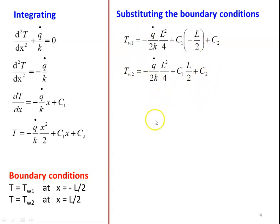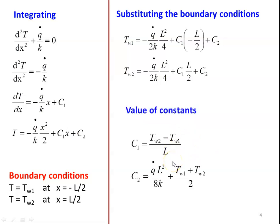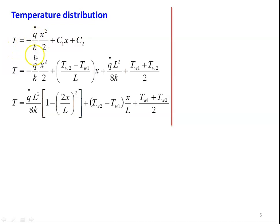Solving the two equations, we find C1 = (TW2 - TW1)/L and C2 = q̇L²/(8k) + (TW1 + TW2)/2. Substituting the constants into the temperature equation, the temperature profile is: T = q̇L²/(8k) · [1 - (2x/L)²] + (TW2 - TW1)·(x/L) + (TW1 + TW2)/2. This is the temperature profile for two different temperatures on the two surfaces.